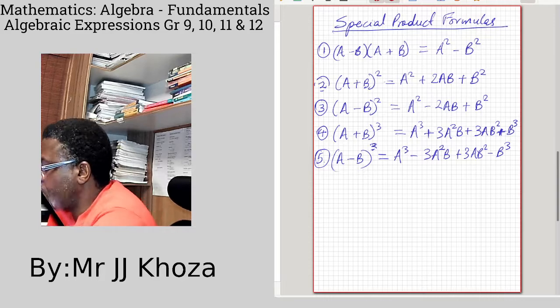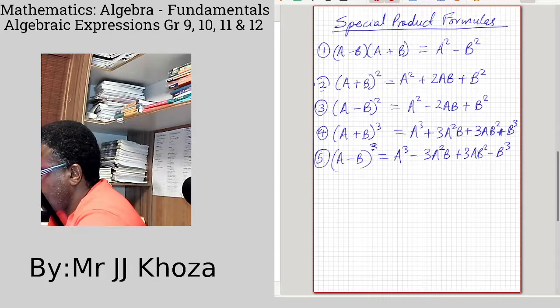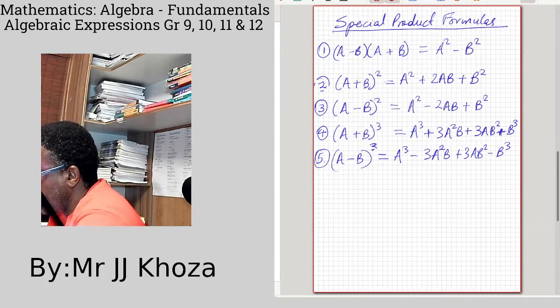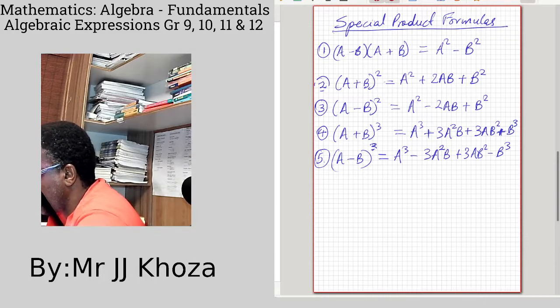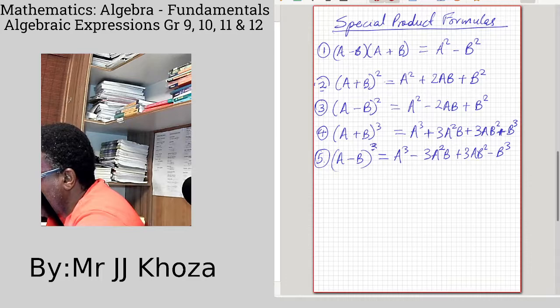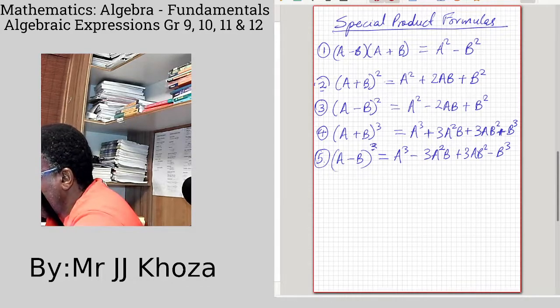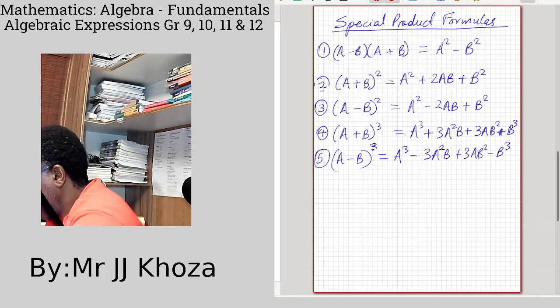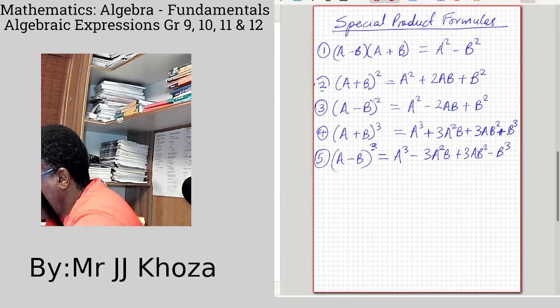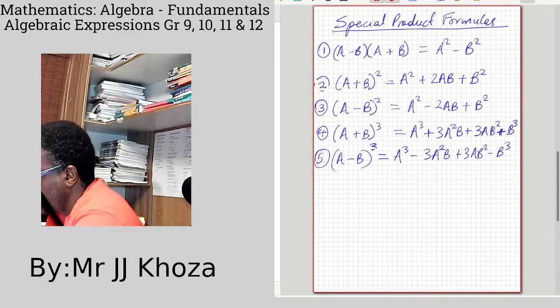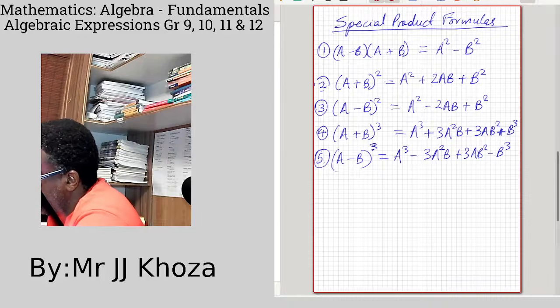Now we talk about special product formulas. I know you guys are more interested in factorization, we'll get there soon. As you can see, a minus b multiplied by a plus b, this is what we get: a squared minus b squared. This is it.